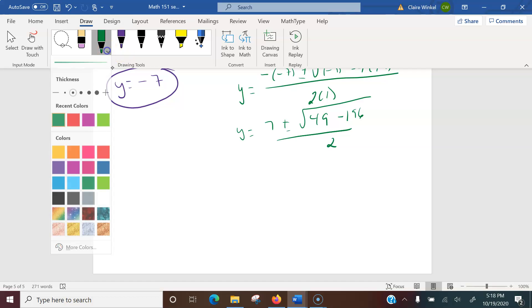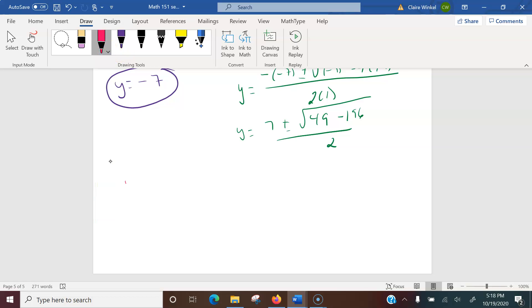Alright, so y equals 7 plus or minus the square root of negative 147 over 2, 7 plus or minus the square root of 147i over 2.